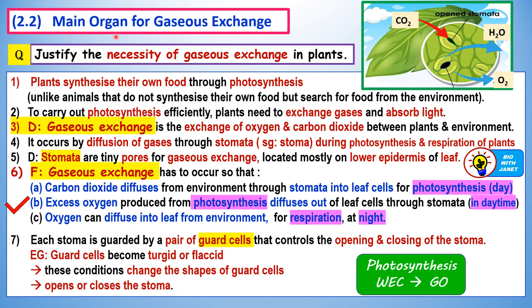In this video we are going to study the leaf as the main organ for gaseous exchange. The first learning outcome is to justify or explain the necessity of gaseous exchange in plants. Plants synthesize their own food through photosynthesis, unlike animals that do not produce their own food but search for food from the environment.